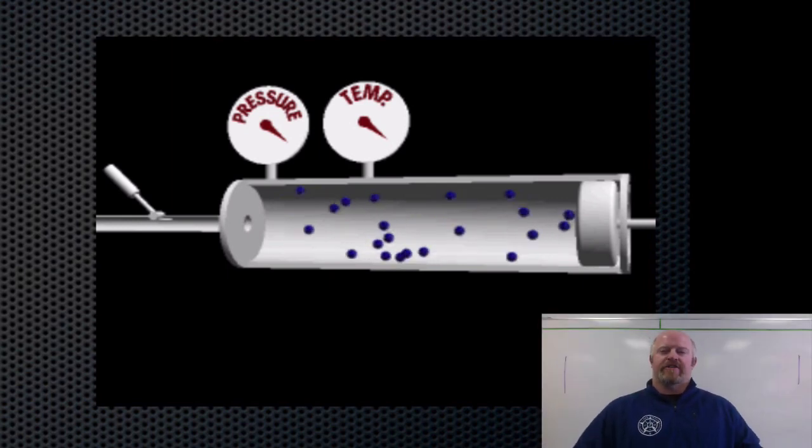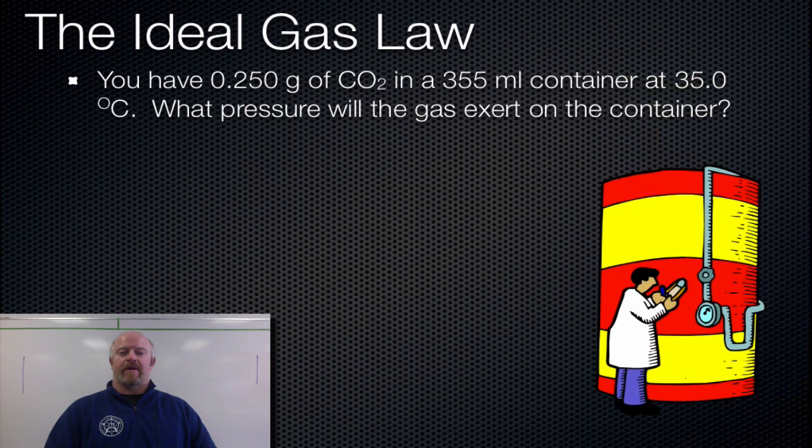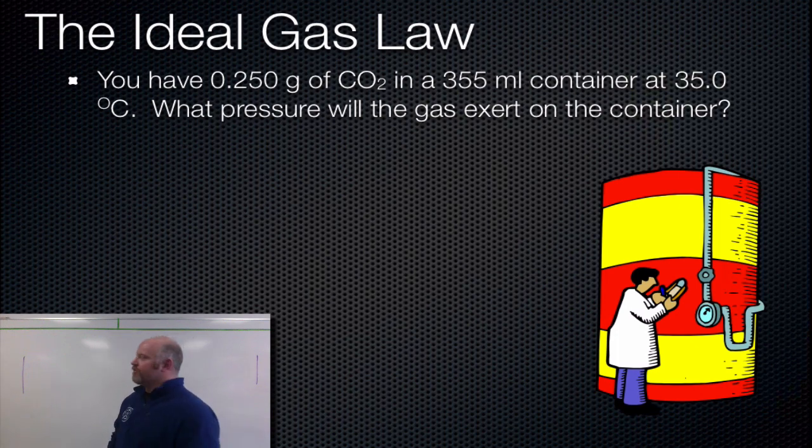Okay, so that relationship is kind of shown in the video there. We're going to move on, and we're actually going to use this equation now in a practice problem. So here's our practice problem for the ideal gas law. You have 0.25 grams of carbon dioxide in a 355 milliliter container at 35 degrees Celsius. What pressure will the gas exert on the container? Now when I solve ideal gas law problems, what I always do is I write the Pivner equation down in a line, and I start labeling out everything I have in the problem, and then I solve it. So I'm going to set it up for you, allow you guys to solve it, and then we'll come back and see the final answer with that. So let's go to the board.